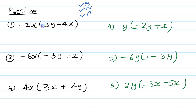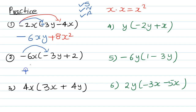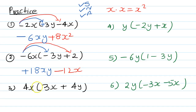Your first answer: if there is no sign it means plus, so minus times plus becomes minus; 2 times 3 is 6; x times y is xy — giving minus 6xy. Then minus times minus becomes plus; 2 times 4 is 8; x times x is x squared — giving plus 8x squared. Next: minus times minus becomes plus; 6 times 3 is 18; x times y is xy — giving plus 18xy.